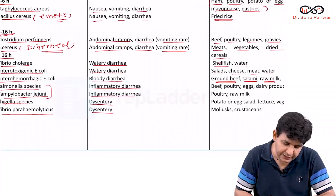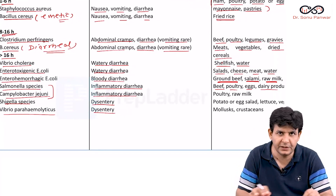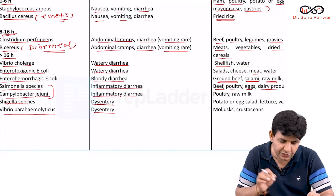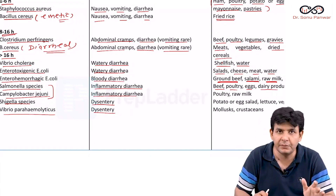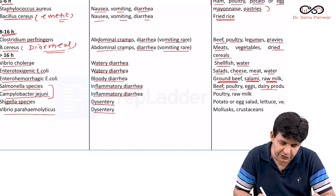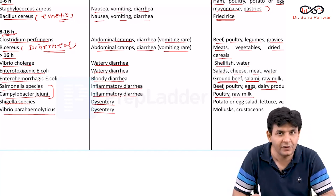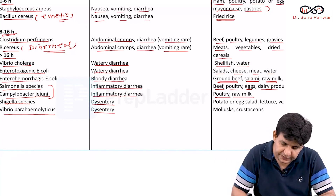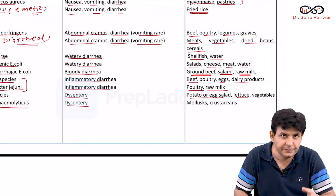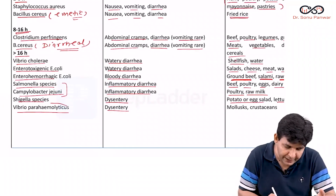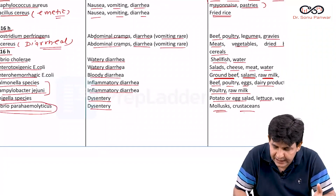Salmonella associates with contaminated beef, poultry products, eggs, and dairy products. Campylobacter jejuni, which causes inflammatory diarrhea, is associated with poultry products and raw milk. Shigella is associated with potato, egg salad, lettuce, and raw vegetables. Vibrio parahemolyticus, being the halophilic one, associates with molluscs and crustaceans.